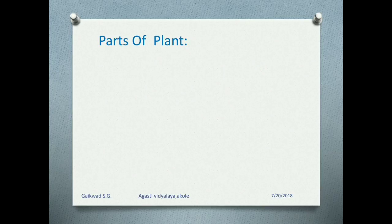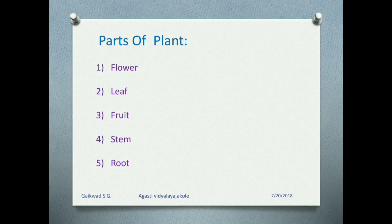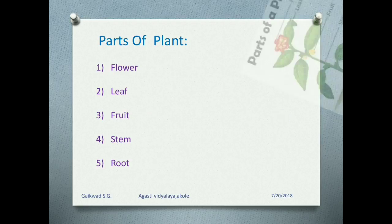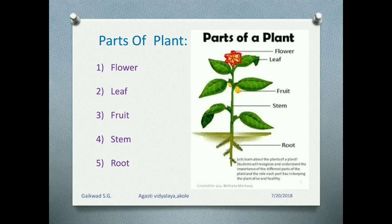So, parts of plant. There are five parts of plant: first is flower, leaf, fruit, stem, and fifth is root. Look at this diagram — you can see there flower, green leaves, fruit, stem, and root.